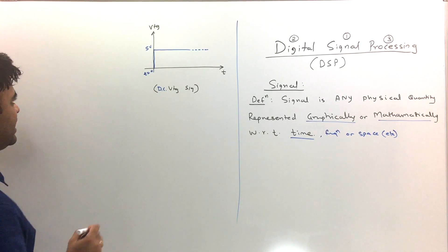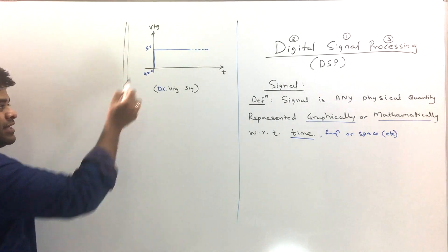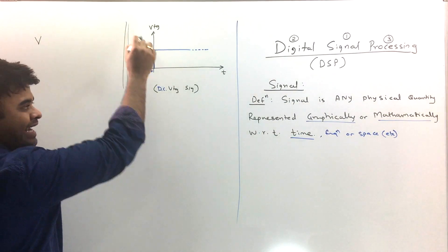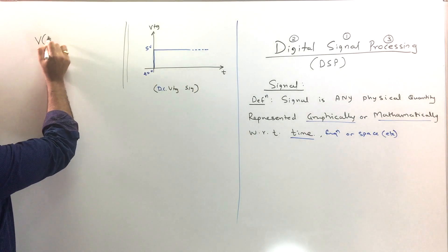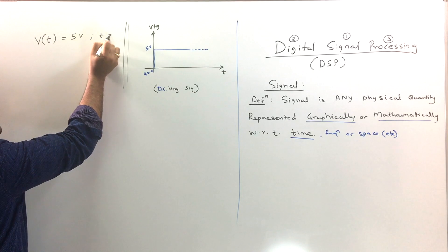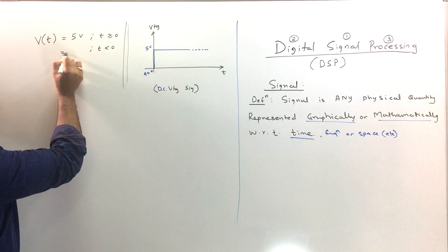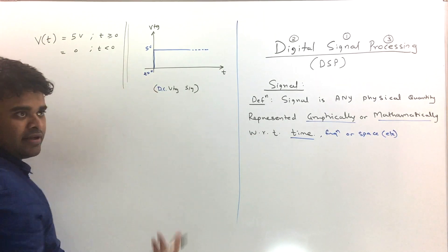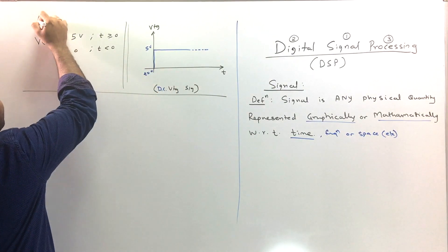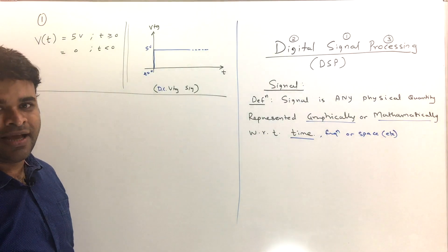Now let me write the same representation in mathematical form. For this signal, voltage V is a function of time: V(t) = 5 volts for t ≥ 0, and V(t) = 0 for t < 0. That's quite simple. So the first example is a DC voltage signal.